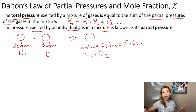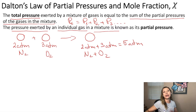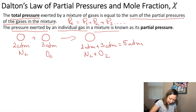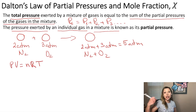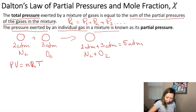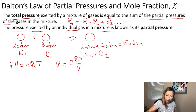Obviously, when talking about pressures we need to use the ideal gas equation, PV = nRT, which I can rearrange to solve for pressure: P = nRT / V.